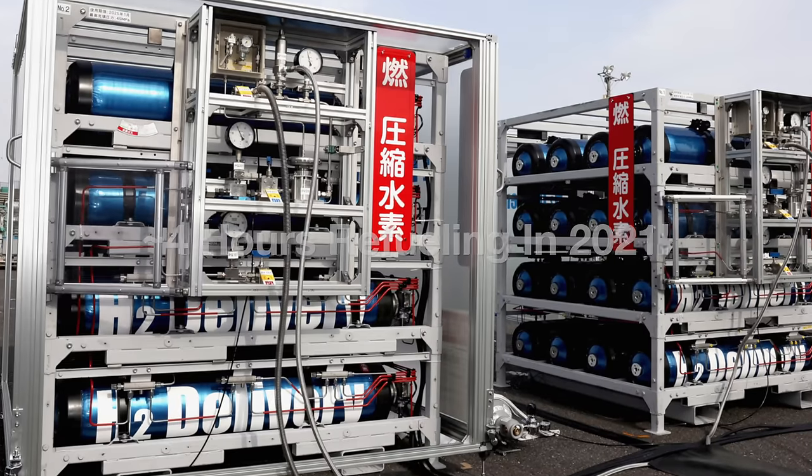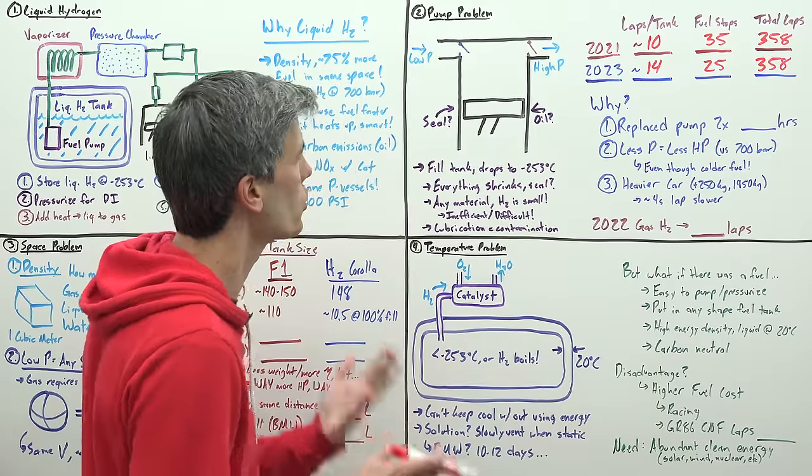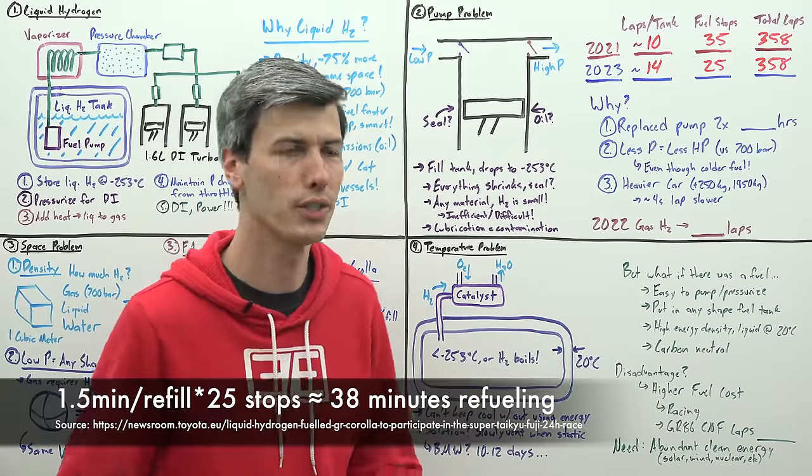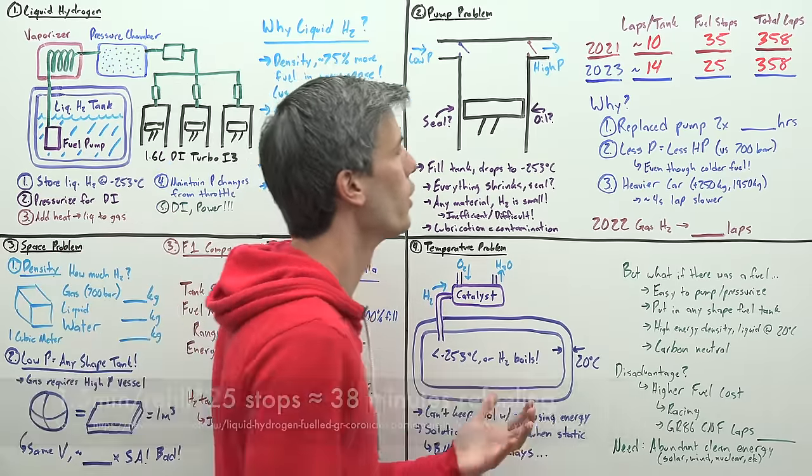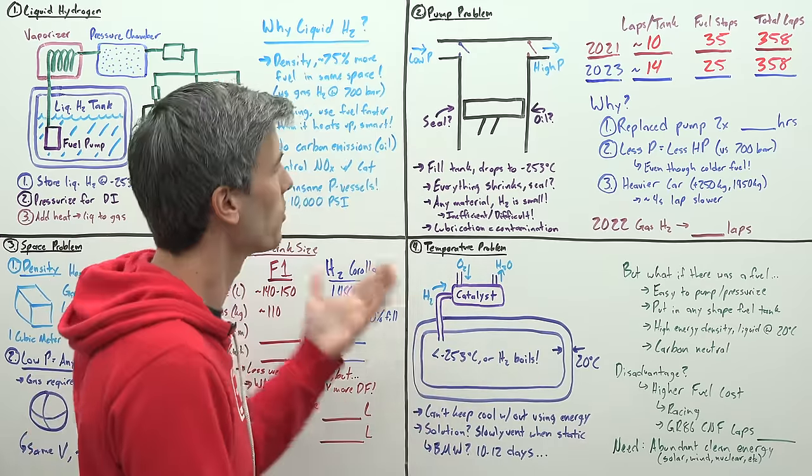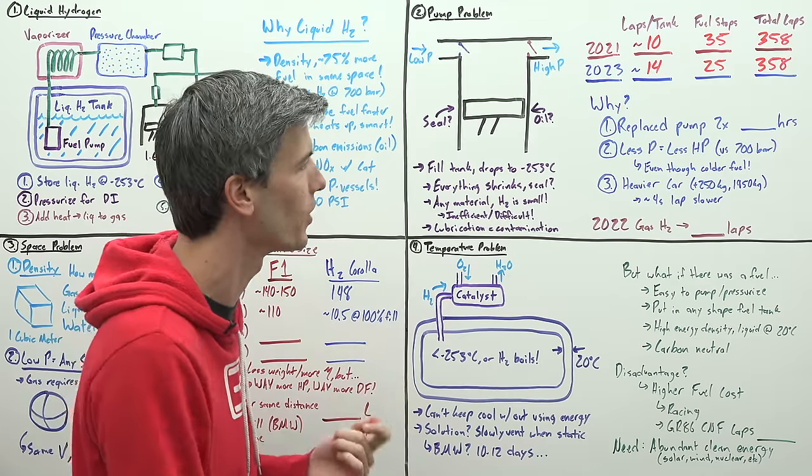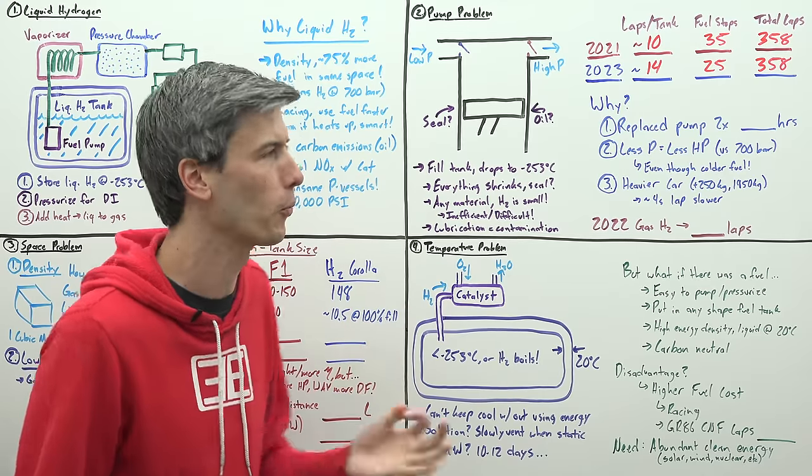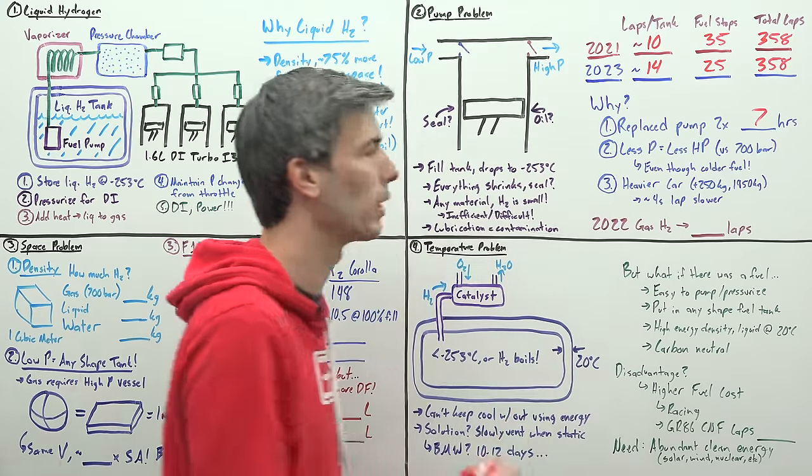The 2021 car spent about four hours refueling in the pits, whereas the 2023 car with liquid hydrogen spent much less time refueling. So why do they have the exact same number of laps? Because they had to replace this fuel pump twice during the race and both times it took about three and a half hours. They spent a total of seven hours replacing that fuel pump.